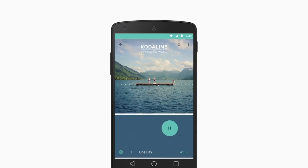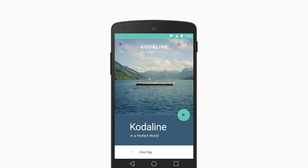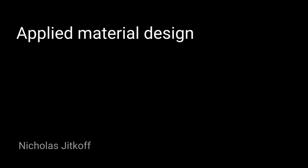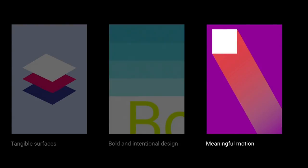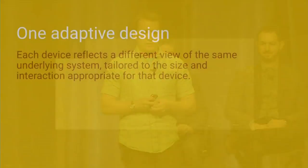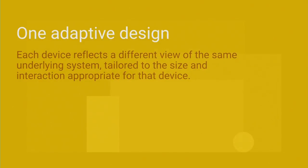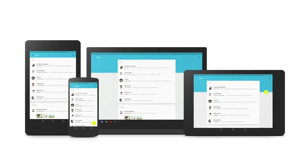These core principles are: tangible surfaces which appeal to the primal parts of our minds with dimension and shading; bold and intentional design which provides a unified language allowing brand and UI elements to stand out; and meaningful motion which fuses design and surfaces together, giving new affordances and life to UI. We want to use these to create a new unified experience for users. We're surrounded by devices, and people experience our work across all different platforms — so we want to treat every device as a window on the same content.